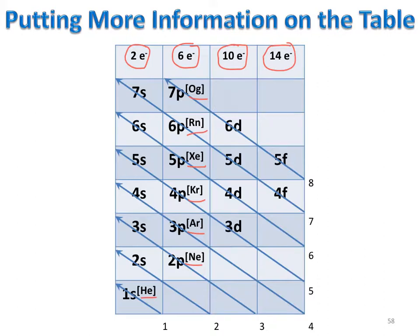Helium is filled up with 1s2; then 2s2, 2p6, and so forth for the subsequent noble gases. If you know what noble gas you're working with, then you know where to start next.